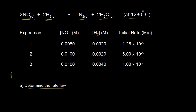From the last video, we know that the rate of the reaction is equal to K, the rate constant, times the concentration of nitric oxide — one of our reactants — raised to some power X. We also know the rate is proportional to the concentration of our other reactant, hydrogen, raised to a power Y. We don't know what X or Y are yet.